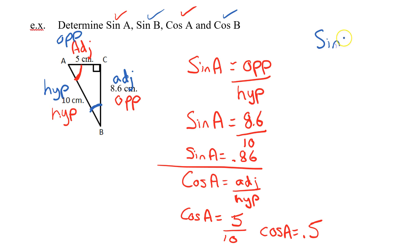The sine of B is the opposite divided by my hypotenuse. Sine of B, my opposite now has become 5 and my hypotenuse has become 10.